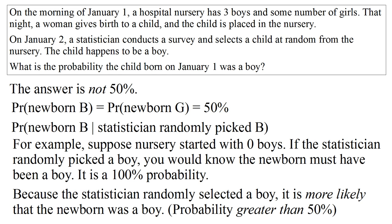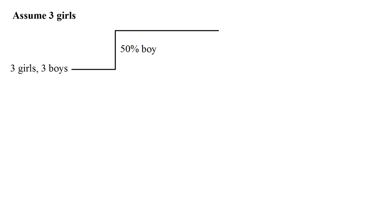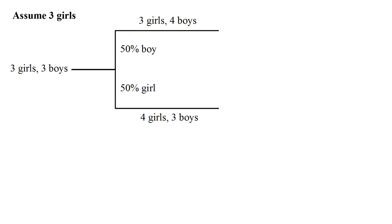Now let's calculate it. The problem does not specify the number of girls at the beginning, but we'll assume three girls and see where this calculation goes. So we start out with three girls and three boys. There is a 50% chance that the newborn child is a boy, making for three girls and four boys. There is also a 50% chance that the newborn is a girl, which makes for four girls and three boys.